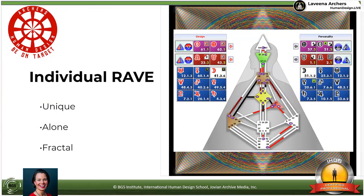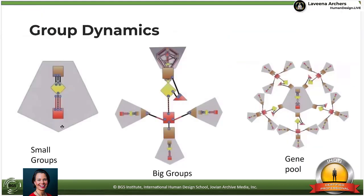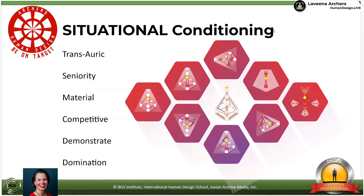A brief overview: this is a rave chart. It shows us our uniqueness when we are alone, and it also shows keys to the fractal nature of our reality — how we connect with others. It's going to show us where your social strengths are. How are you designed to be correct in a group dynamic, whether that be a small group, a big group, or even a gene pool?